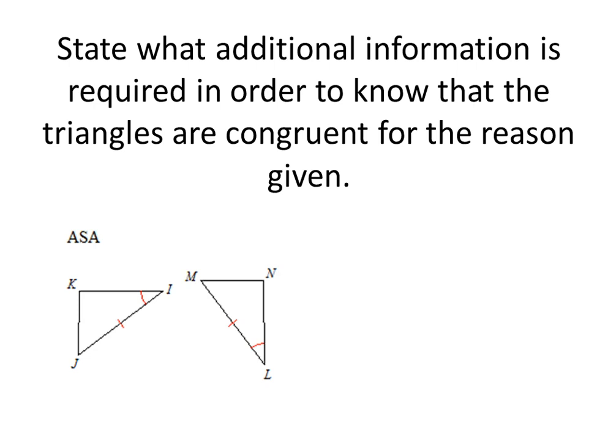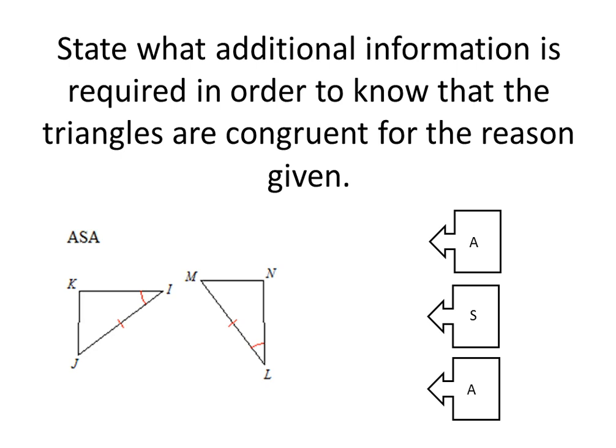Here we have angle-side-angle. We have two triangles, and angle-side-angle requires an angle, a side, and an angle. We already have labeled on these two triangles a set of angles that are congruent: angle I is congruent to angle L. Then we also have a side already labeled: side IJ is congruent to ML.